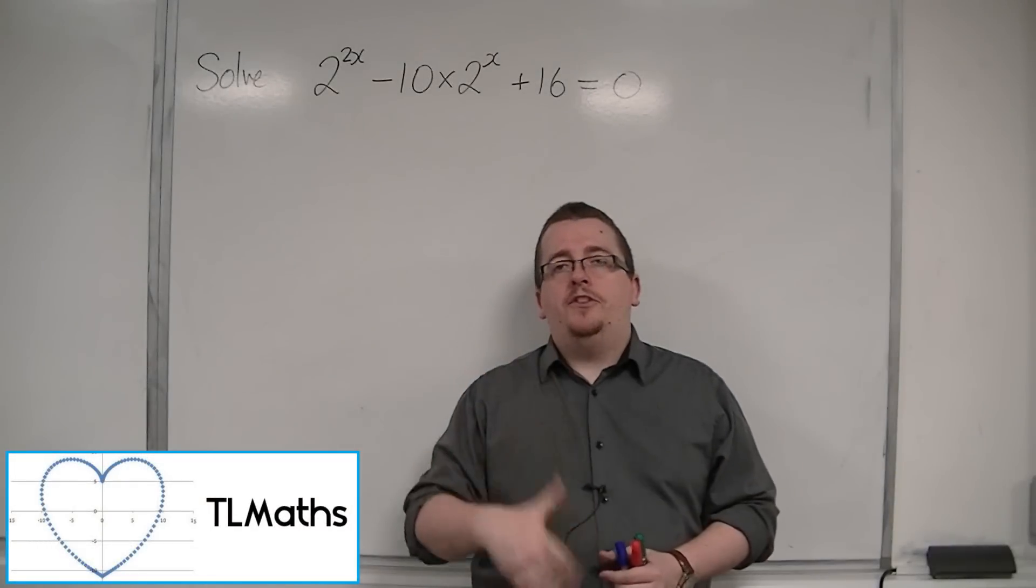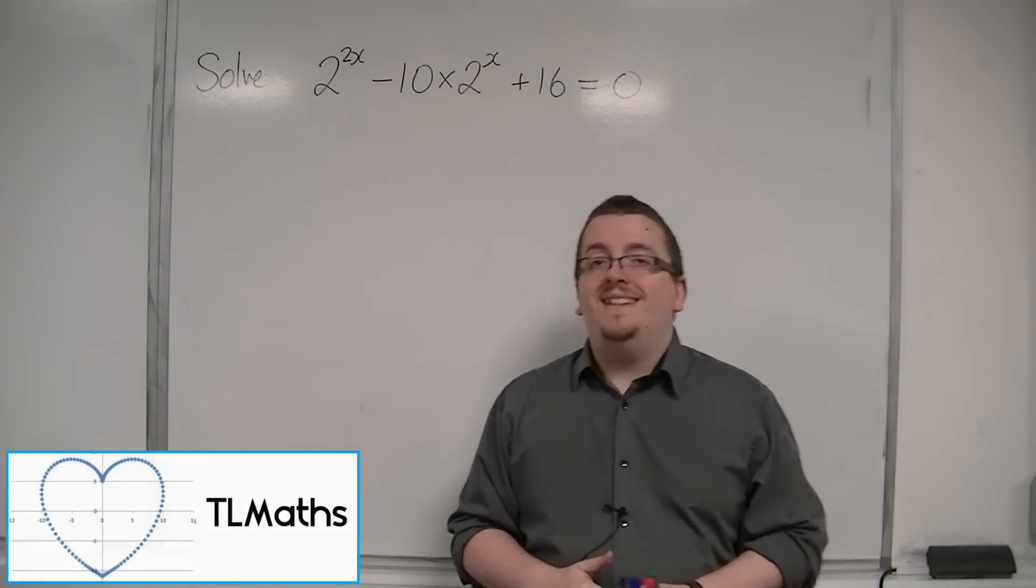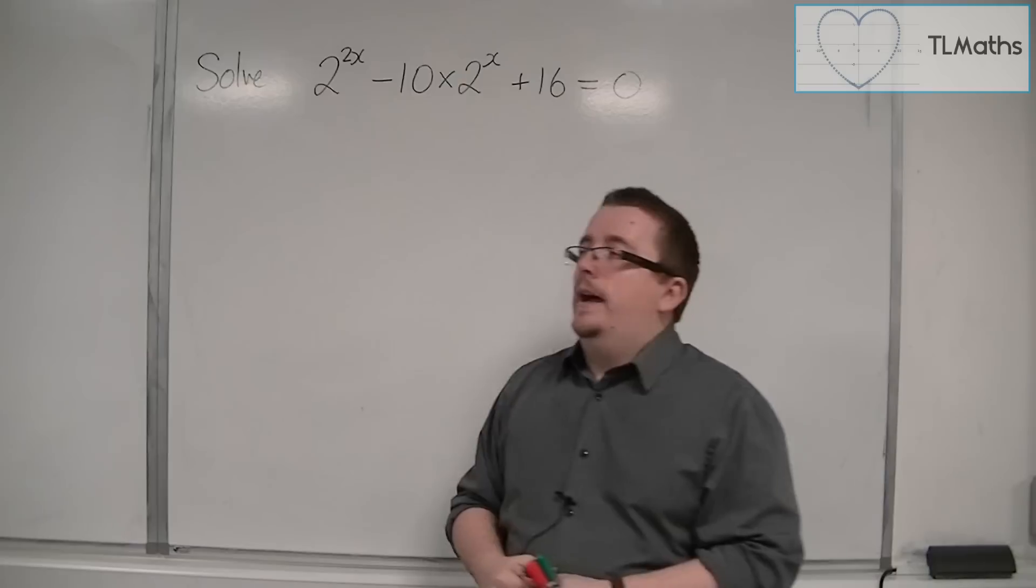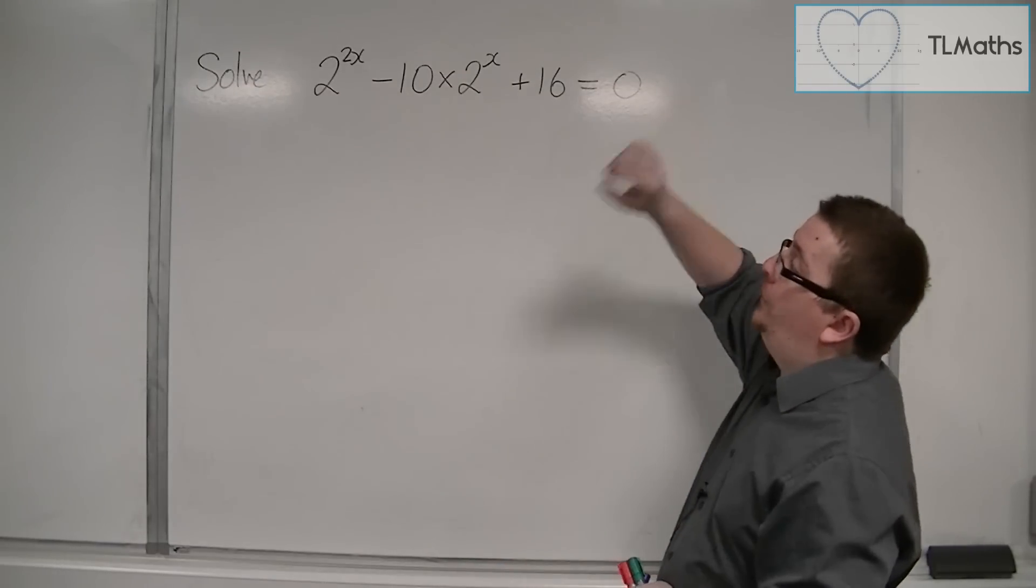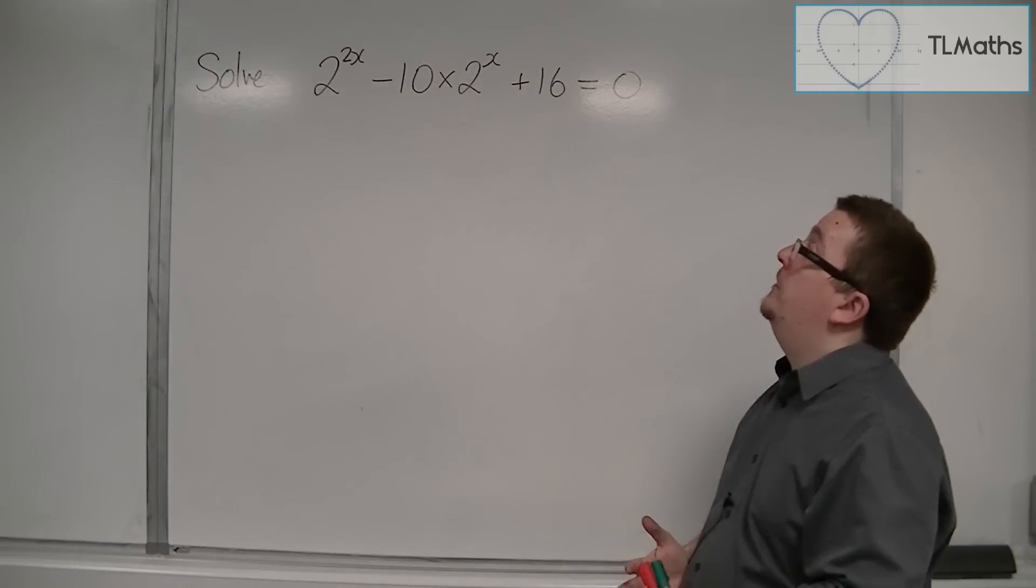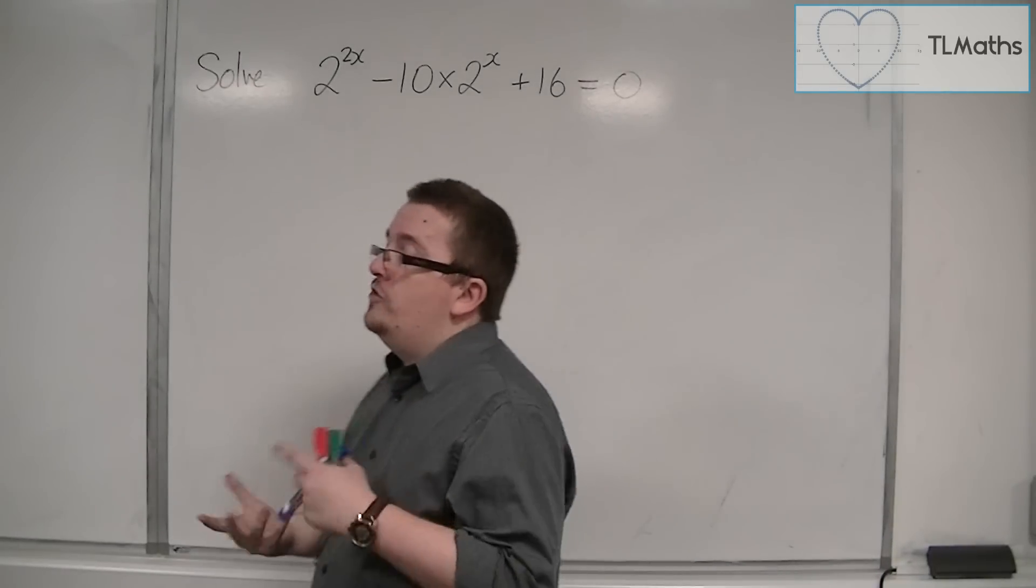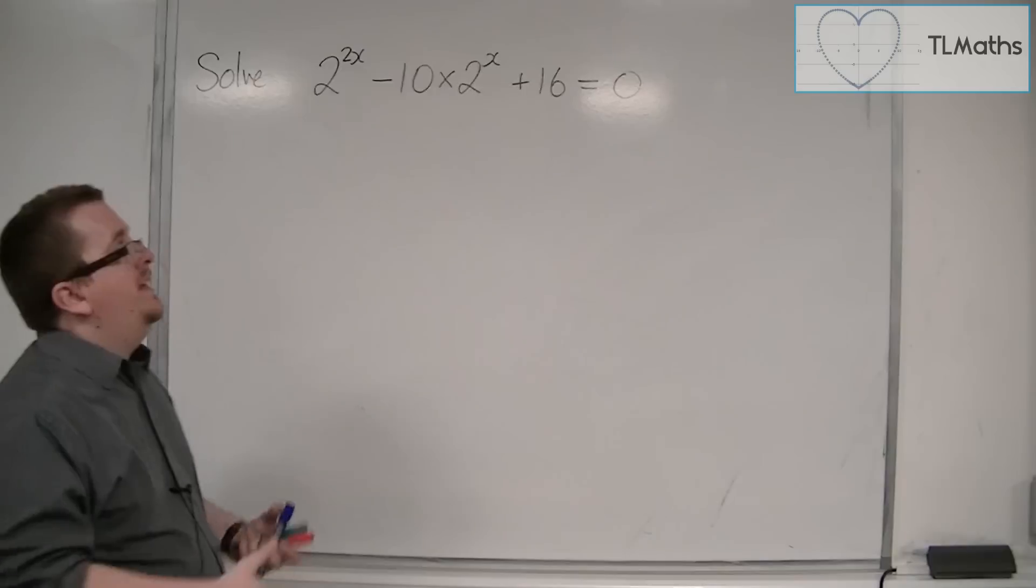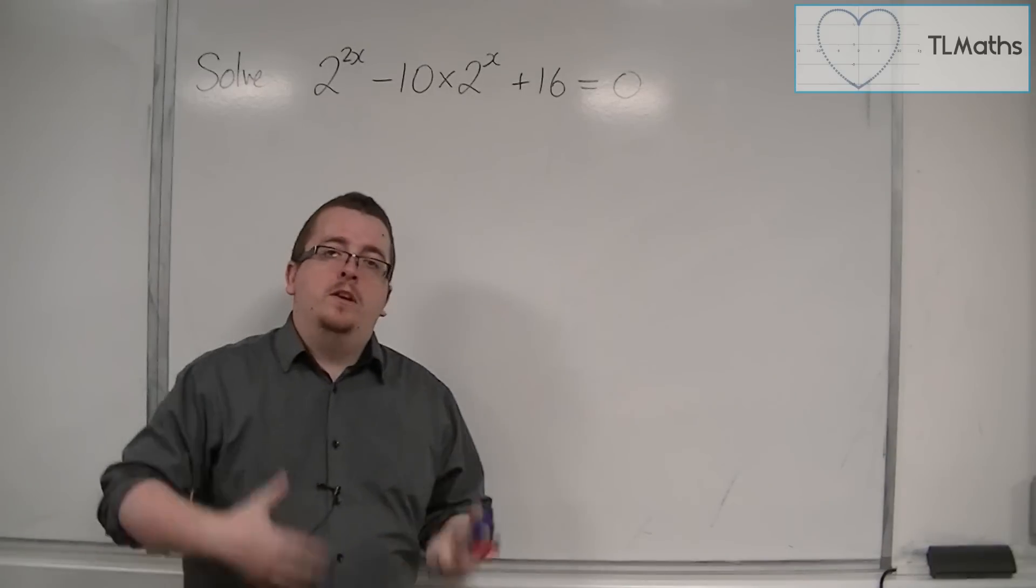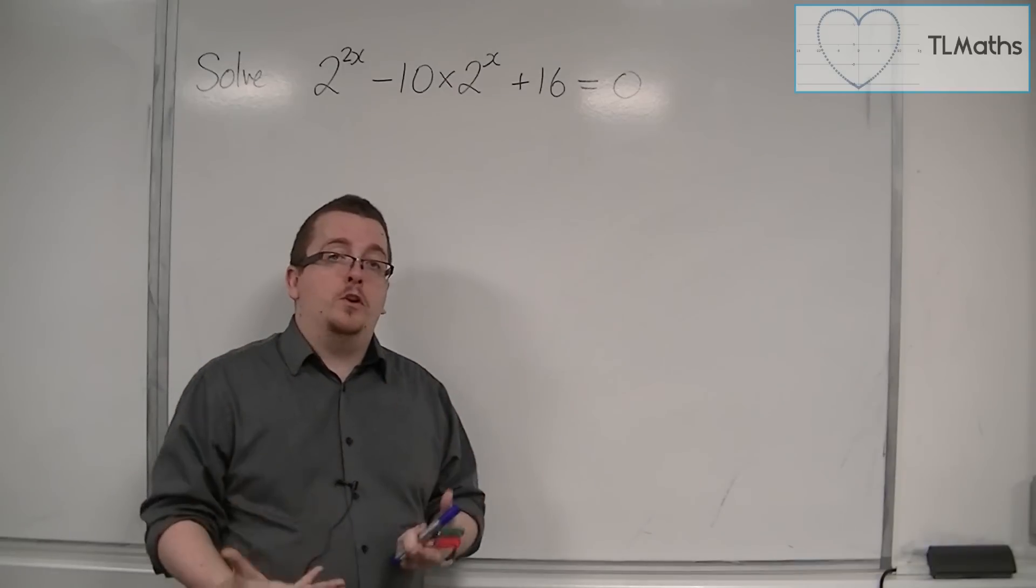Now we've met hidden quadratics, or quadratics in disguise, before. And here is an example of one: 2^(2x) - 10 × 2^x + 16 = 0. The reason why I'm reintroducing it here is because this can lead to solving exponential equations.